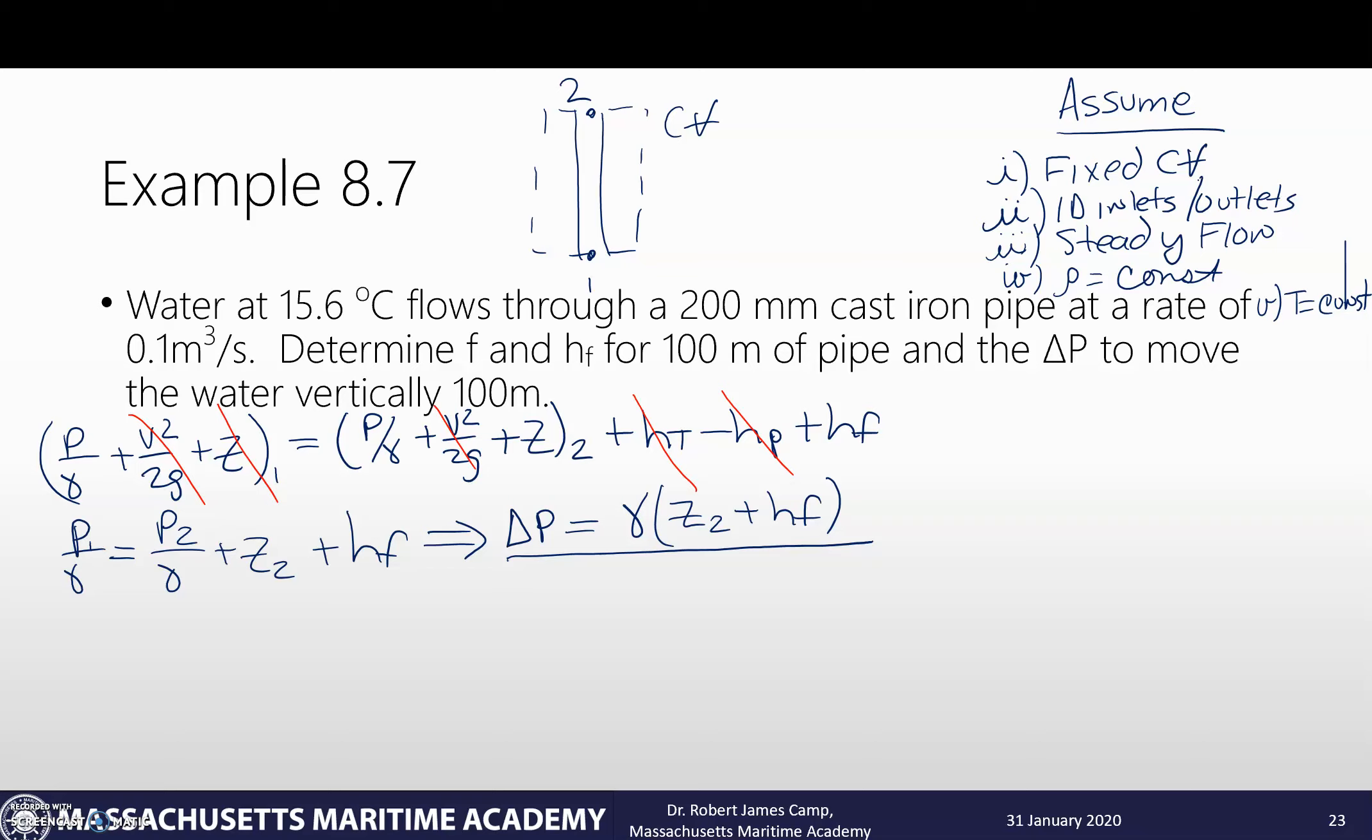And we're going to do that just like we've done with some of the other example problems. To calculate out HF I need to solve the Weisbach equation. To solve the Weisbach equation I'm going to need the Darcy friction factor. How do we calculate that? I need to know the Reynolds number based on diameter. So Vd over nu. So let's look up our properties of water. Properties of water at 15.6 degrees centigrade is going to give us a kinematic viscosity of 1.12 times 10 to the negative 6 meters squared per second. So we need that piece of information.